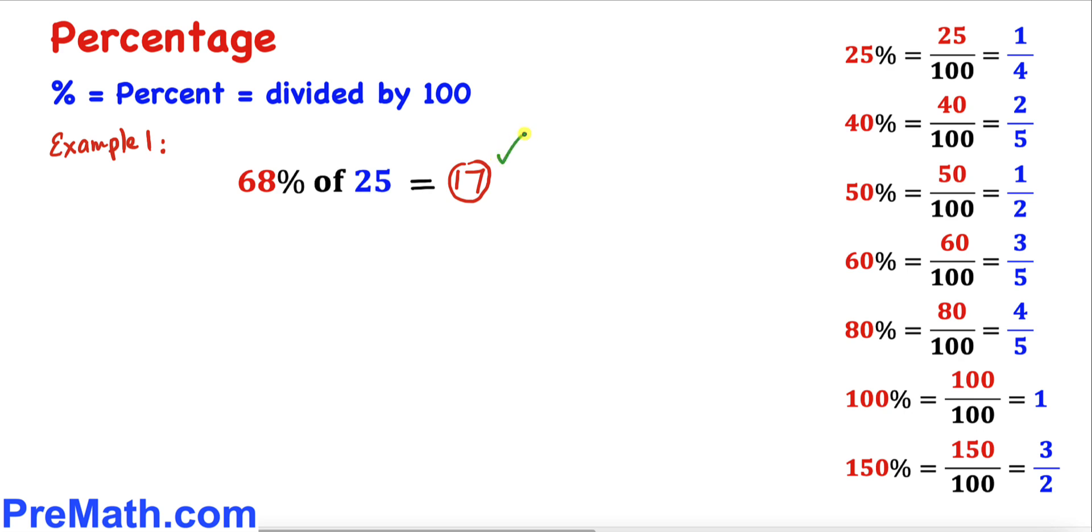68 divided by 4 is going to be 17, so therefore 68 percent of 25 equals 17, our answer.